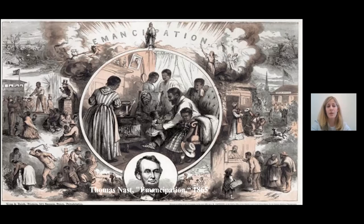After abolition, freed people strove to exercise their newly acquired rights. They sought to locate and reconnect with long-lost family members from whom they had been separated under slavery. Freed people established schools and universities to gain literacy and a robust education. They signed contracts for paying jobs, started businesses, and built churches where they could worship as independent communities. Freed people faced significant anti-black racism, however, that influenced the dynamics of the post-emancipation era.